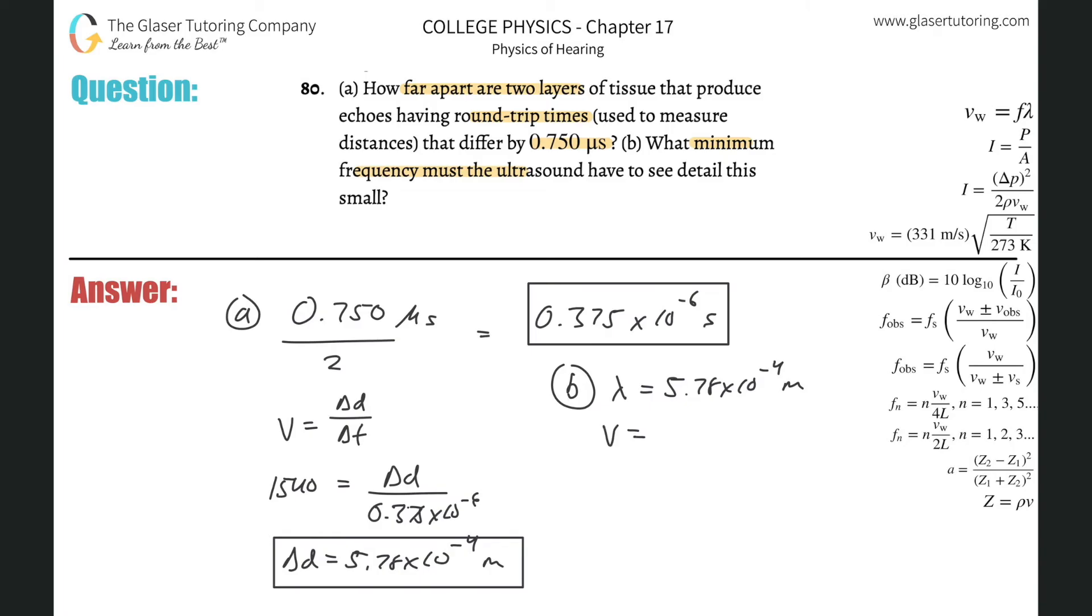We also know the velocity—we'll choose the average velocity of 1540 meters per second traveling through—and now I need to find the frequency. What formula relates those variables? Velocity equals frequency times wavelength. Solving for frequency, we get velocity over wavelength, so we can plug it in.